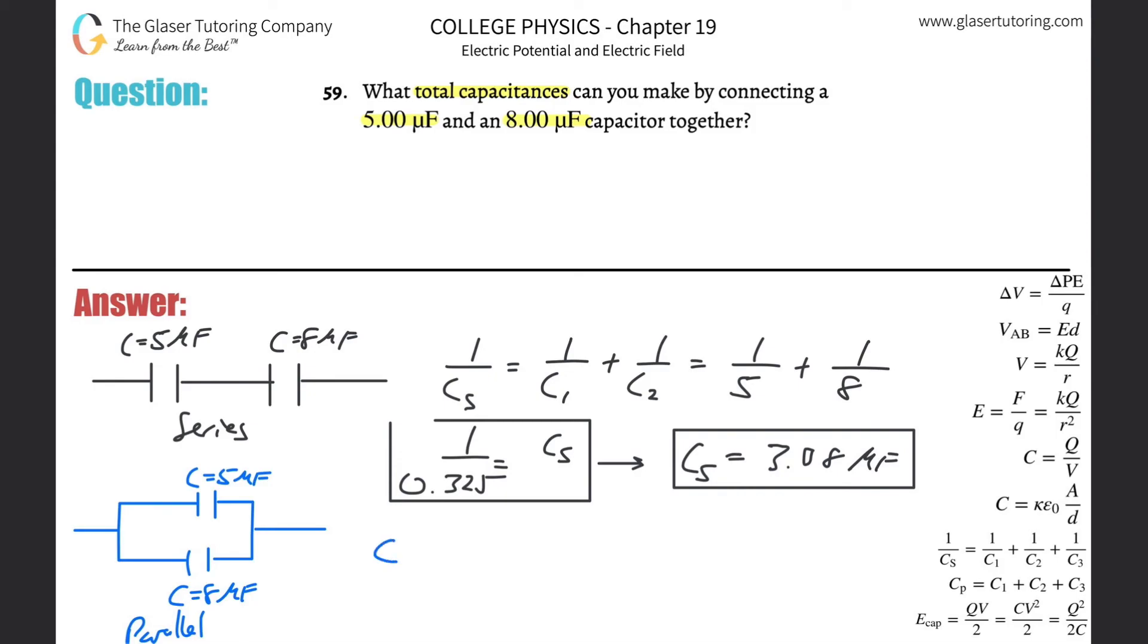Next, to find the capacitance in parallel, you just simply add them together: C1 plus C2. This is nice, right? It's just 5 plus 8, that's going to equal 13 microfarads. Notice that when the capacitors are in parallel, they essentially sum together and the total capacitance will be larger than any of the individuals.